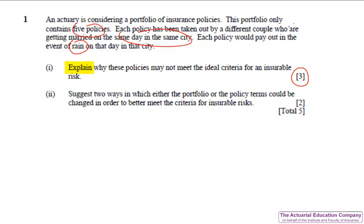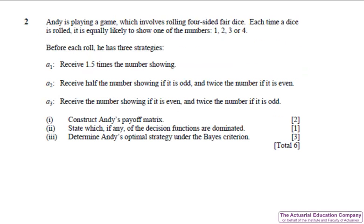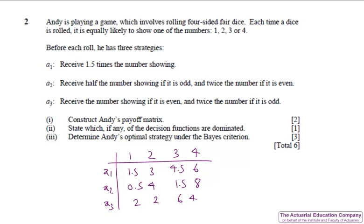As a slight aside, a number of students seem to think that the statement in the notes which says policyholders should have an interest in the risk simply meant that they're interested in buying this insurance. No, we're talking about having a financial interest in the risk, i.e. they're going to lose out. Question two is an exceptionally easy question on decision theory from chapter one of the notes, and would have presented absolutely no bother whatsoever to well-prepared candidates.